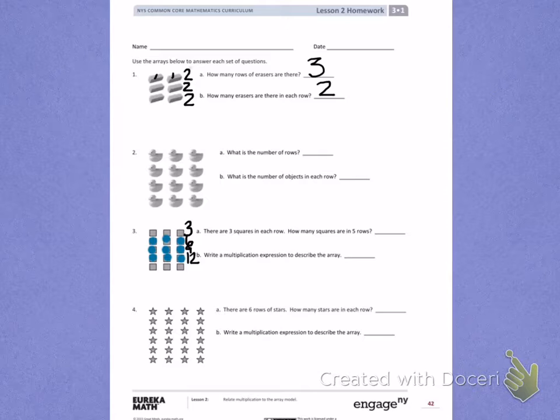And 13, 14, 15. So 3 squares in each row, and 5 rows is 15 squares.